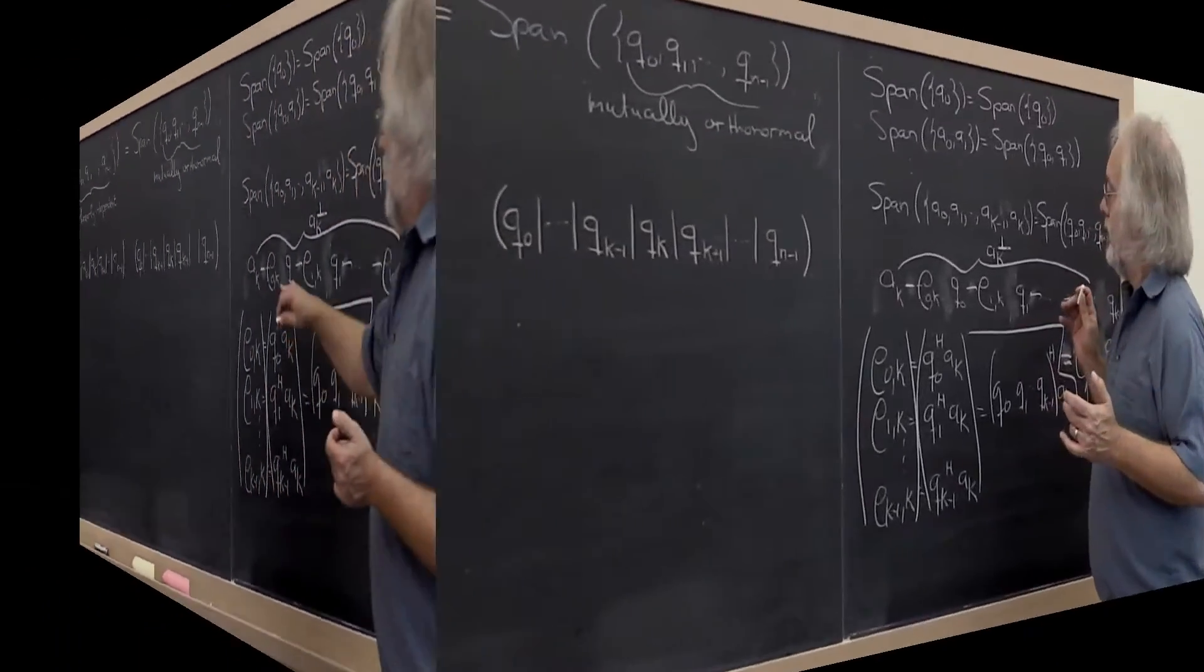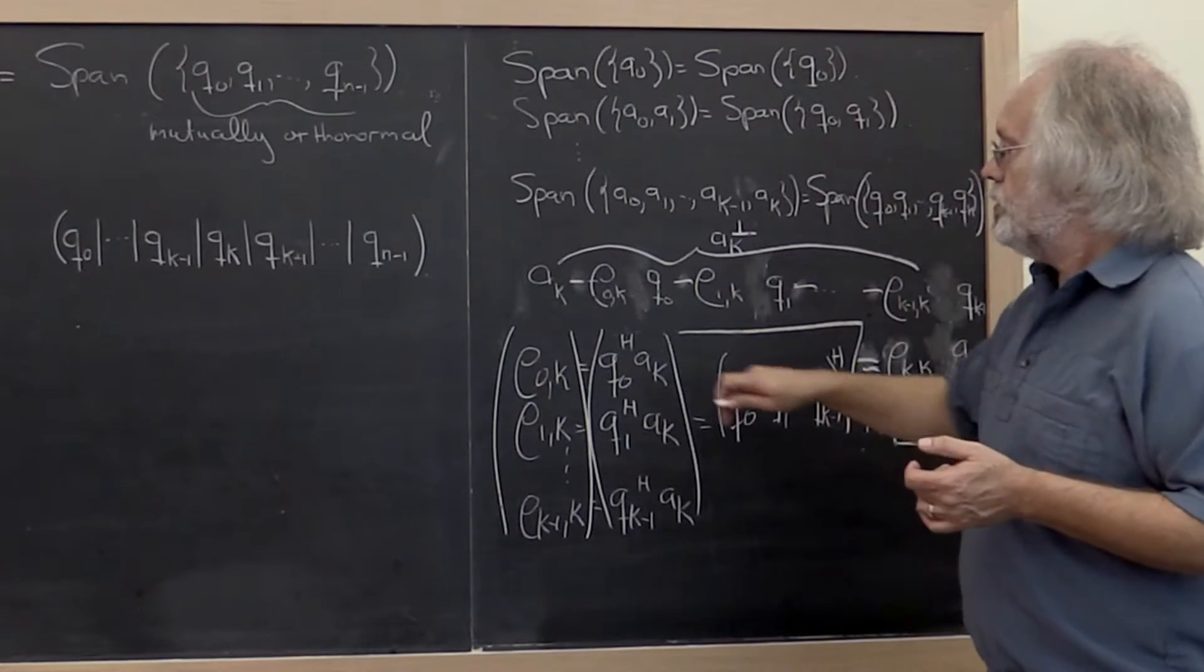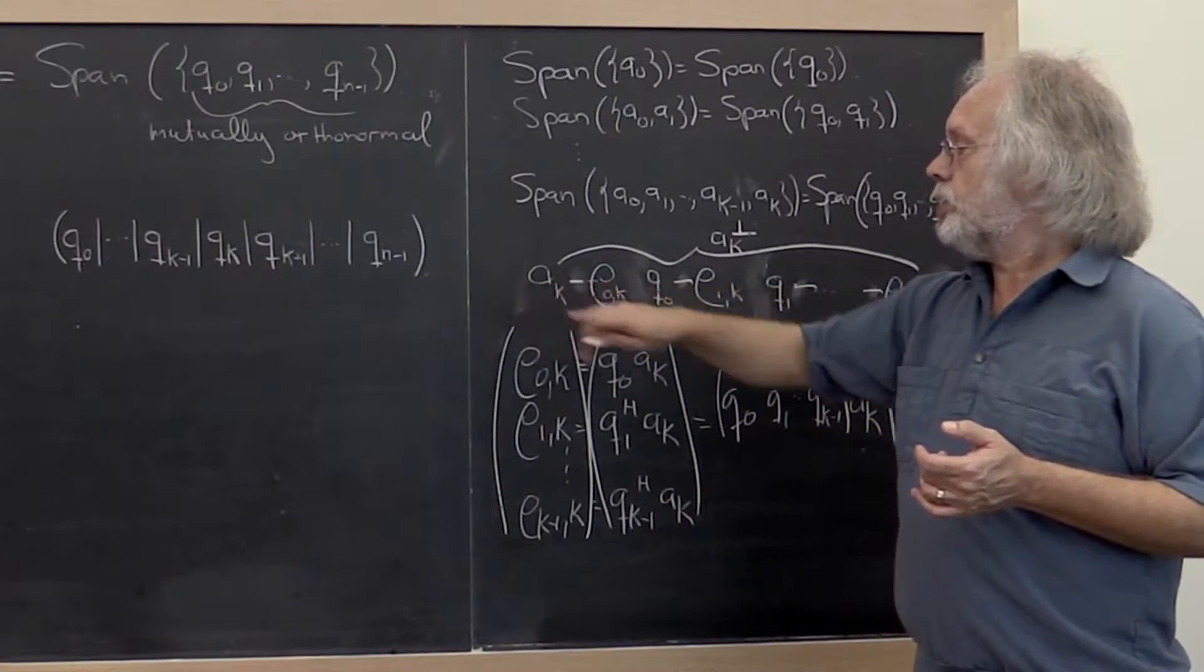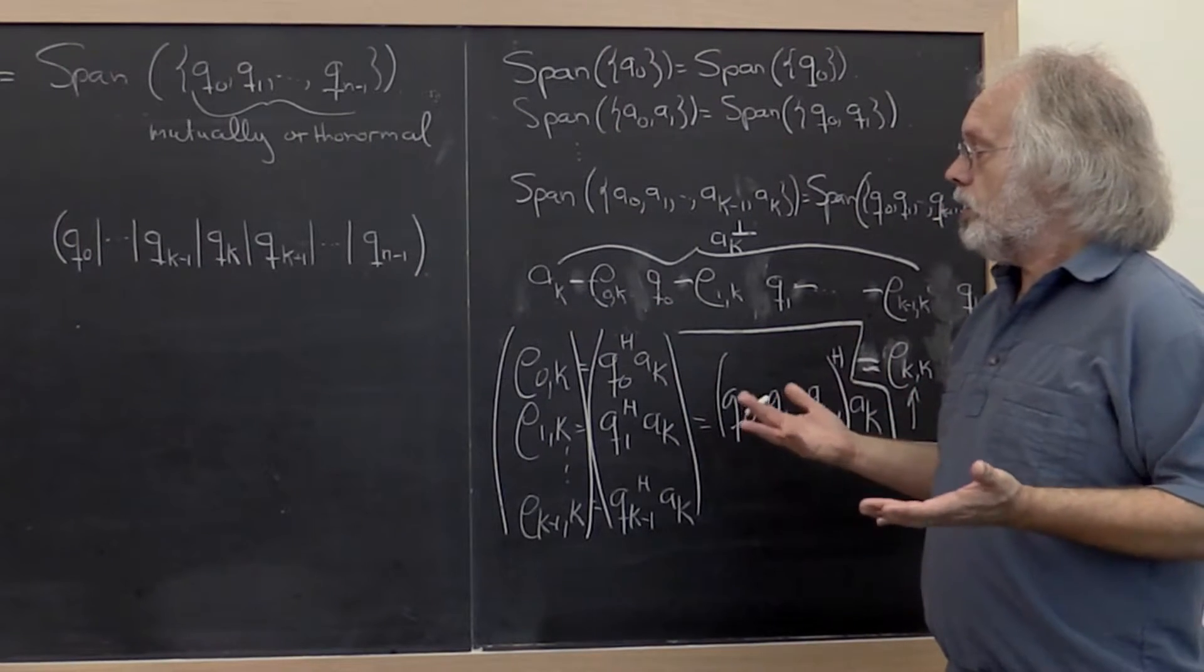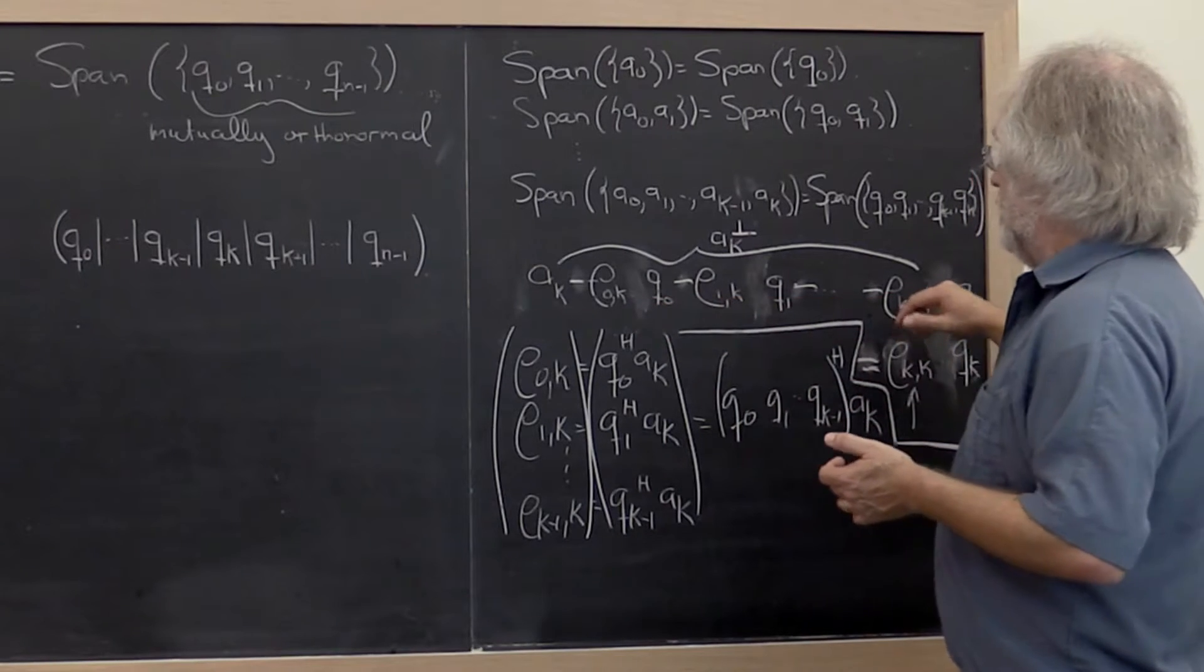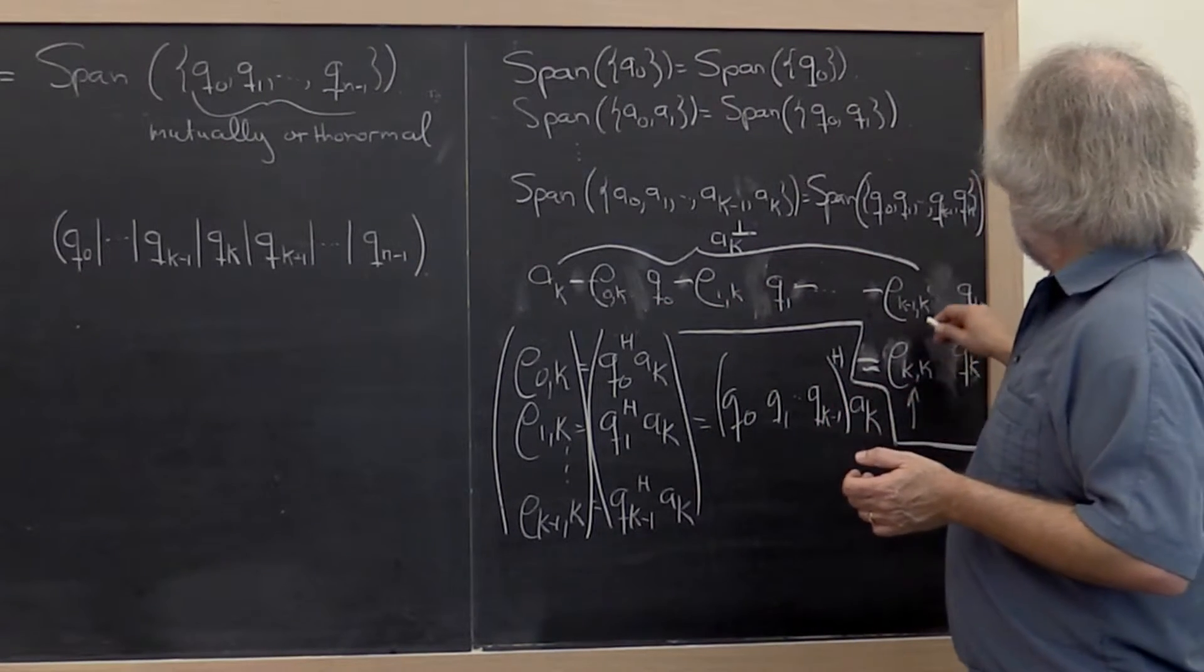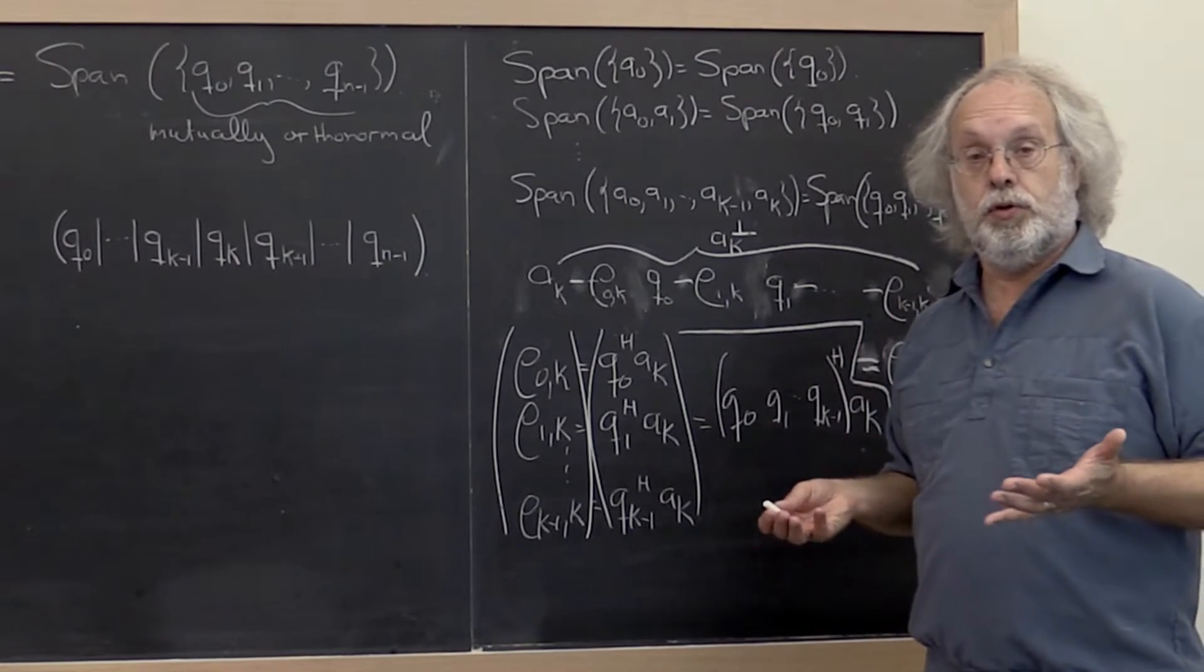So in the last video we rearranged this equation so that it became obvious how to compute the component of a_k orthogonal to all of the vectors q_0 through q_{k-1} that we have computed previously.